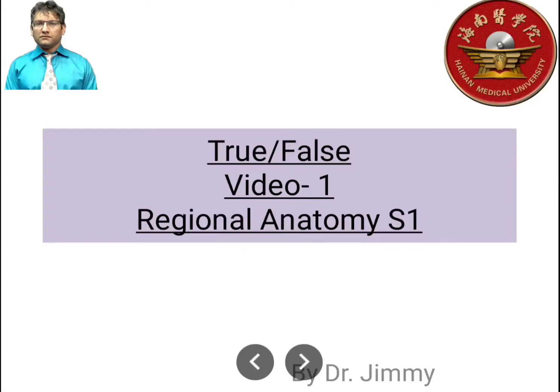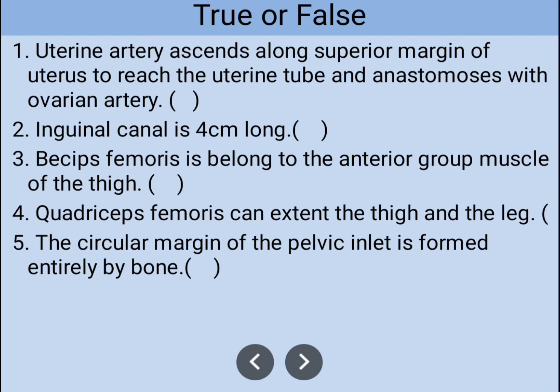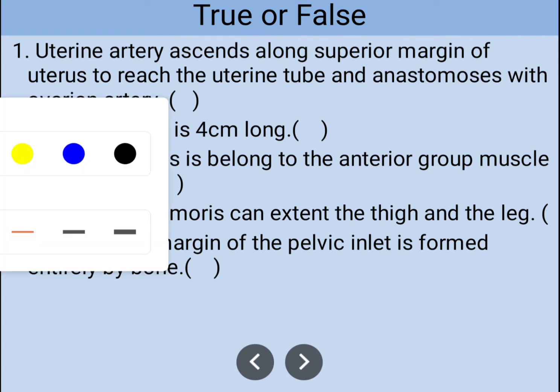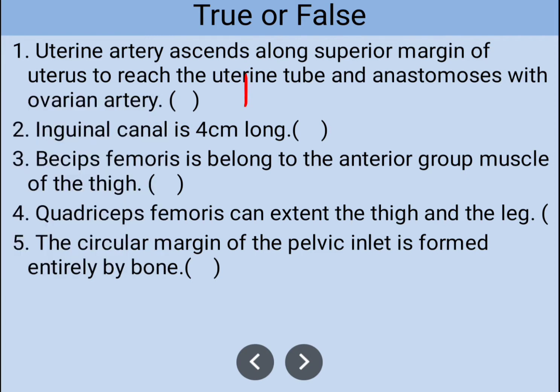Good morning dear students, today we're going to learn about the true or false questions for the S1 exam. This is the first video. Number one: the uterine artery ascends along the superior margin of the uterus to reach the uterine tube and anastomoses with the ovarian artery. This is true information.